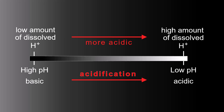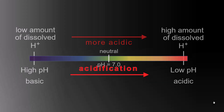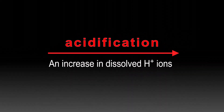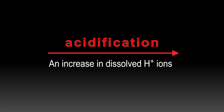In the laboratory, we have ways of identifying how basic or acidic something is by the color occurring on a universal indicator. Right in the middle, a greenish color is neutral — pH 7. So acidification is an increase in dissolved hydrogen ions.